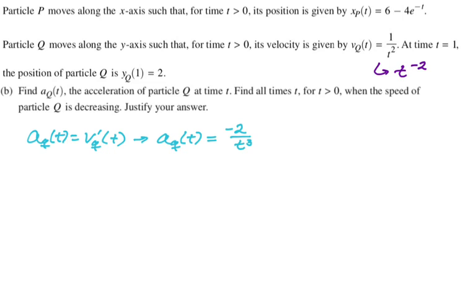Alright. Find all times t when the speed is decreasing. So for speed to be decreasing, I need velocity and acceleration to have opposite signs. So if we look at this, v_Q(t) is one over t squared. And one over t squared is greater than zero for all t greater than zero. So velocity is always positive.